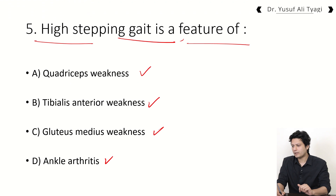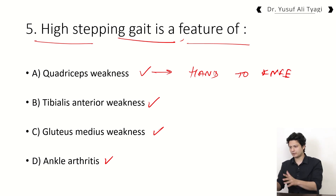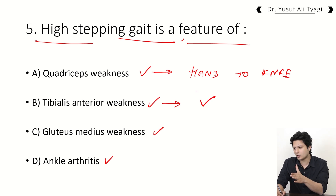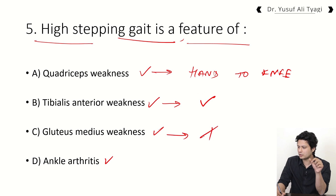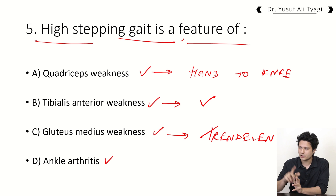Quadriceps weakness is responsible for hand-to-knee gait. Tibialis anterior weakness — yes, this is the direct answer, as high stepping gait is a feature of tibialis anterior weakness. Gluteus medius weakness is responsible for Trendelenburg gait, which requires a separate explanation involving the abductor mechanism. Ankle arthritis leads to fixation in the neutral or dorsiflexed position, not plantar flexion — so high stepping gait is confirmed as a feature of tibialis anterior weakness. The simpler version: foot drop is a feature of common peroneal nerve injury.